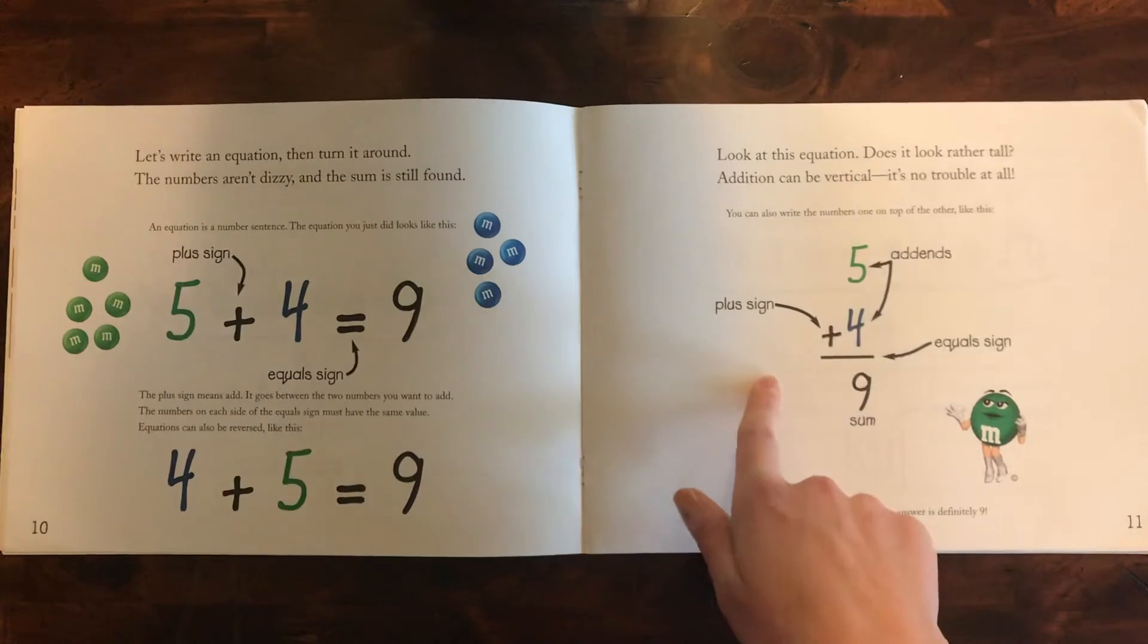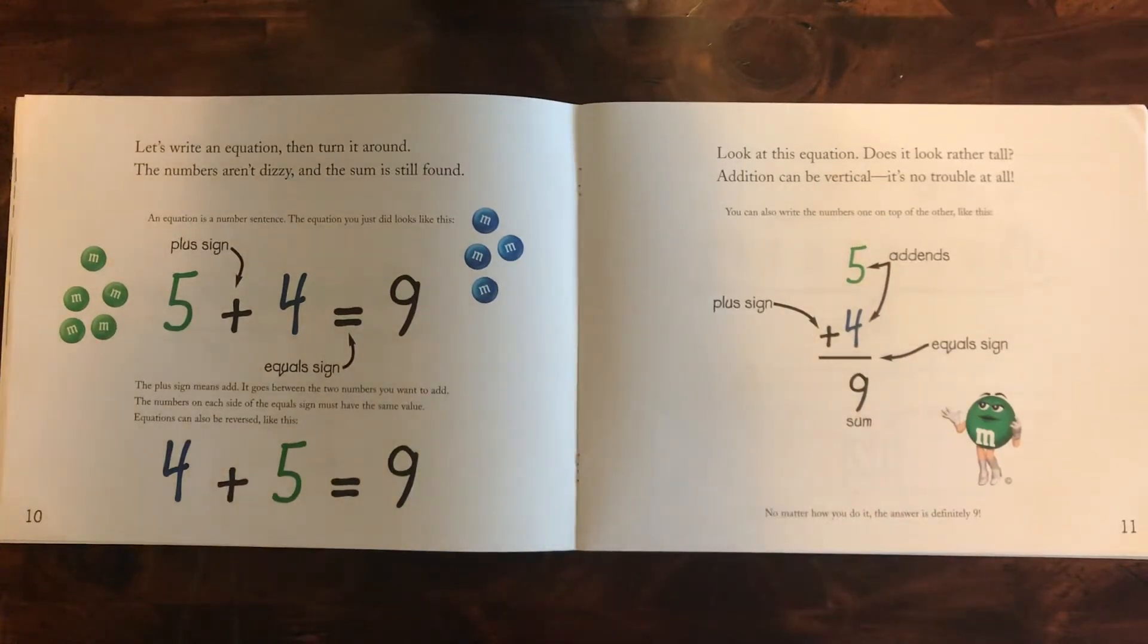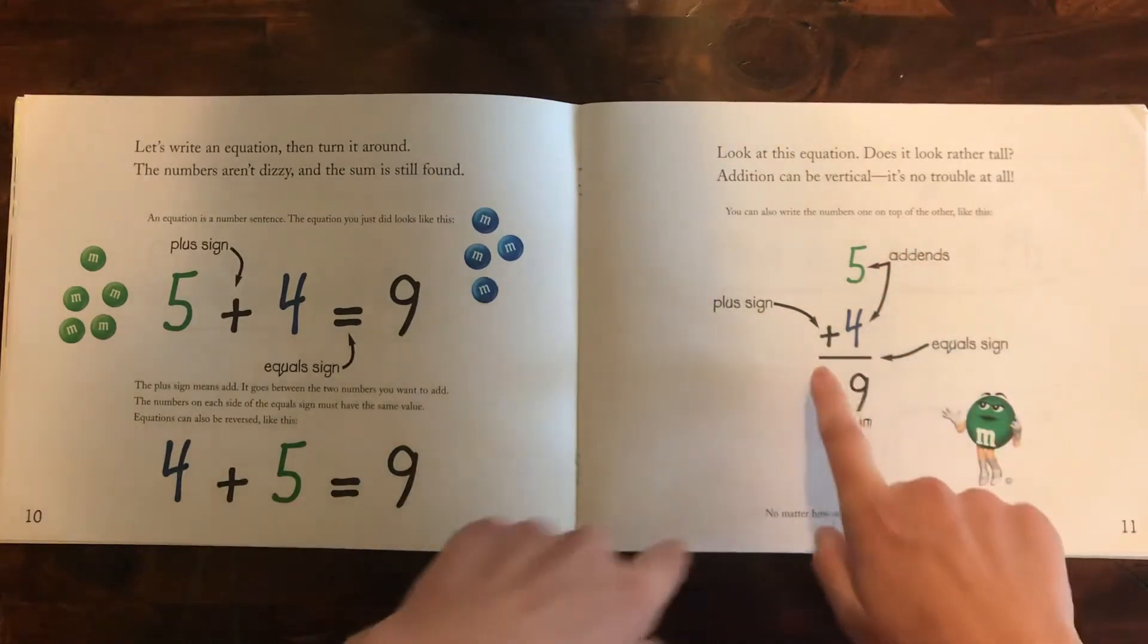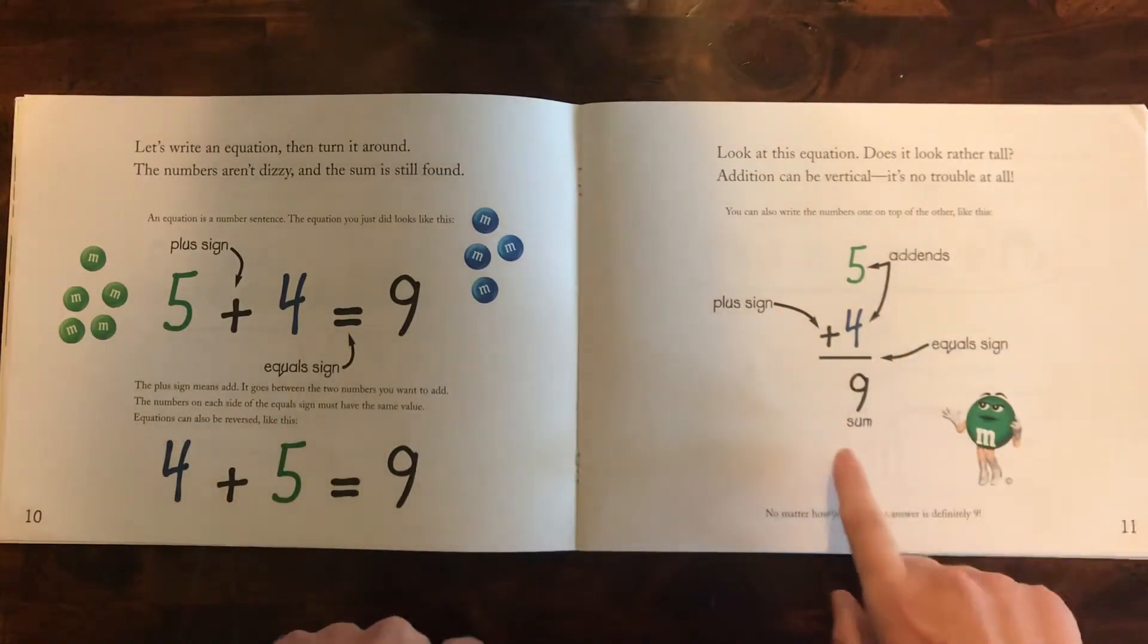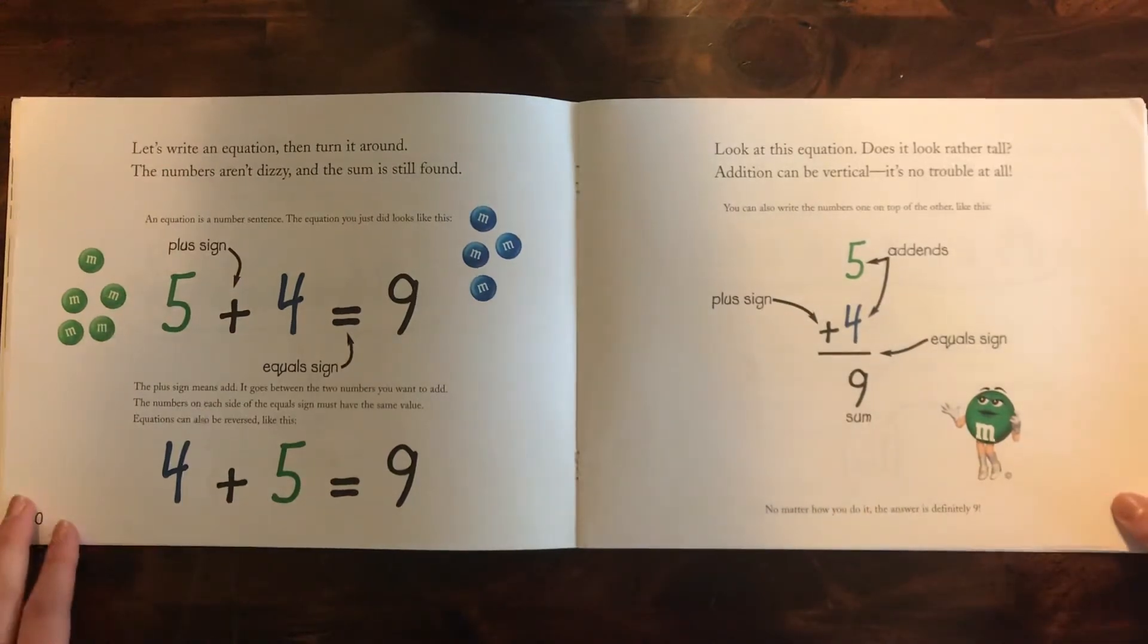Look at this equation. Doesn't it look rather tall? Addition can be vertical. It's no trouble at all. You can also write the numbers one on top of the other like this. So you put your addends right there. You have your plus sign. This line is the equal sign and the sum on the bottom. No matter how you do it, the answer is definitely nine.